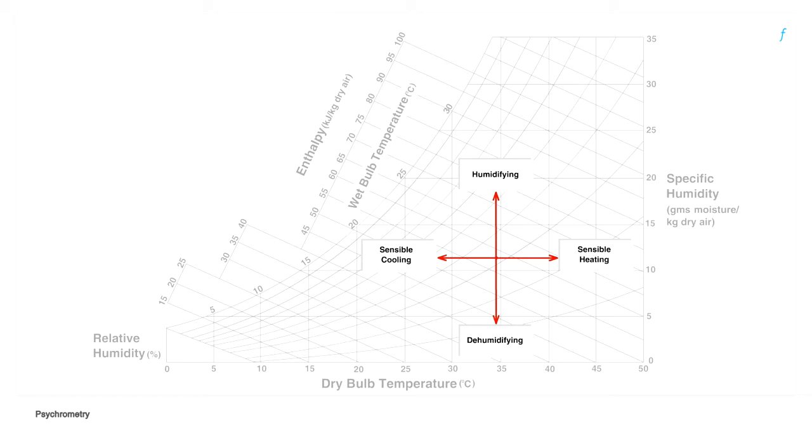Moving perpendicular to the wet bulb temperature lines would cause a combination of cooling and dehumidification or heating and humidification. Moving along the wet bulb temperature line downwards would be heating and dehumidification whereas upwards would be cooling and humidification, which is what happens during evaporative cooling.